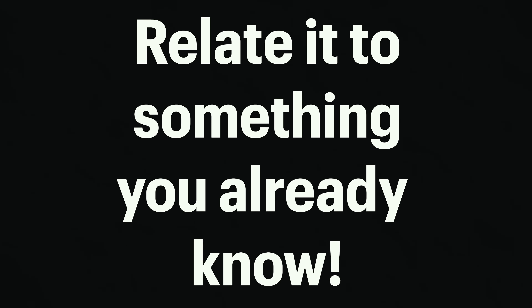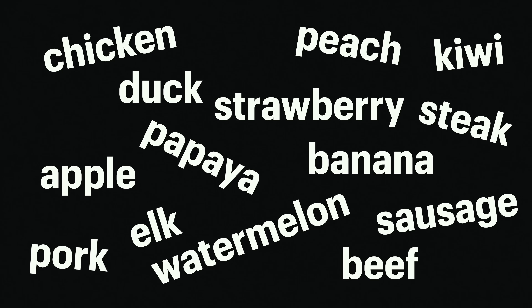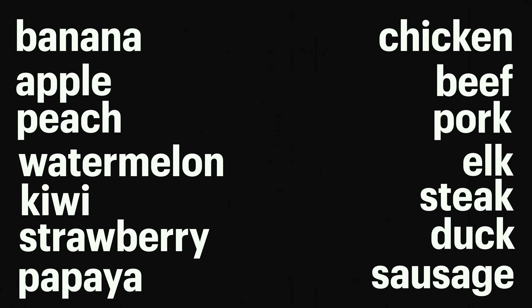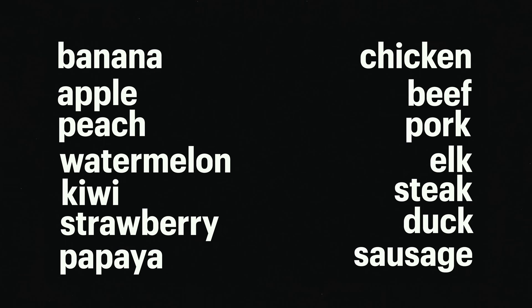So when you're learning something, especially if it's for the first time, the easiest way to grasp the concept is to try to relate it to something you already know. This is how you give something meaning — by relating it to some prior knowledge. For example, if I asked you to learn all these terms, it would be difficult if you just went at it randomly. But if you had prior knowledge that these are fruits and these are meats, you can categorize them, and then learning becomes much easier.